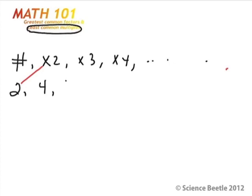Another multiple of 2 is going to be 6 — that's when you take 2 and multiply it times 3 to get 6. When you multiply it by 4 you get 8, times 5 is 10, times 6 is 12, times 7 is 14, and you can keep going on and on. All of these are going to be multiples of 2.